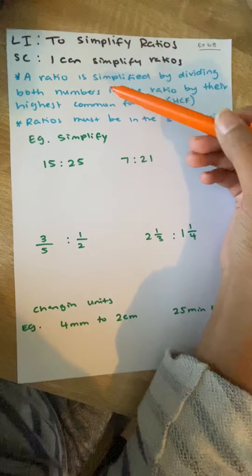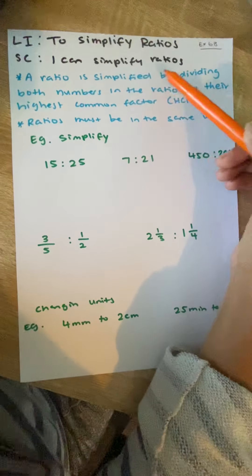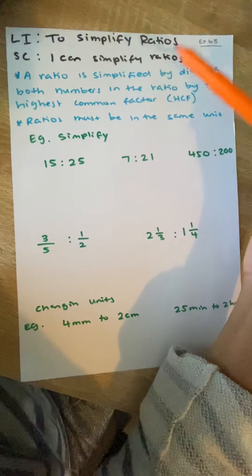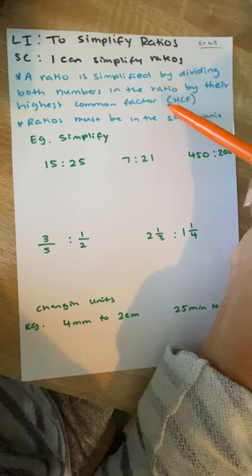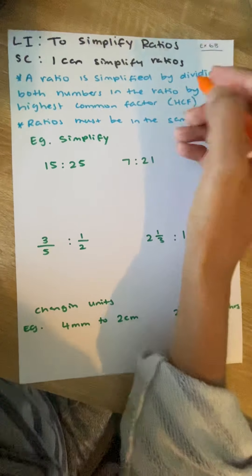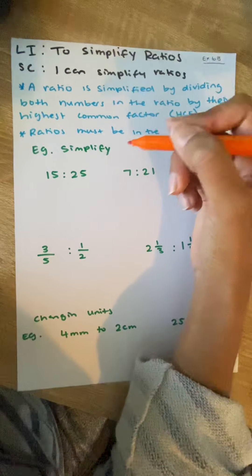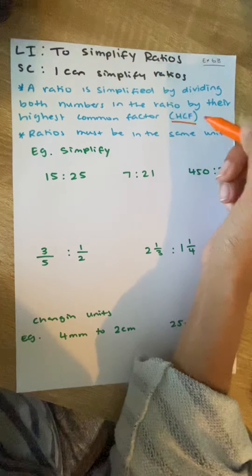A ratio is going to be simplified by dividing both numbers, remember there's always two or more numbers, in the ratio by their highest common factor. So remembering your highest common factor is a number that goes into both of the numbers that we are talking about, and ratios, when we communicate them in written examples, they need to be of the same unit.